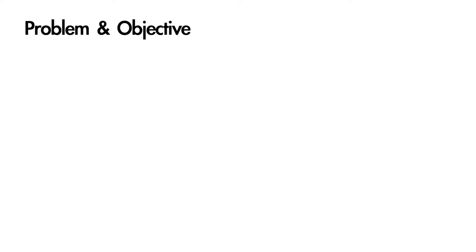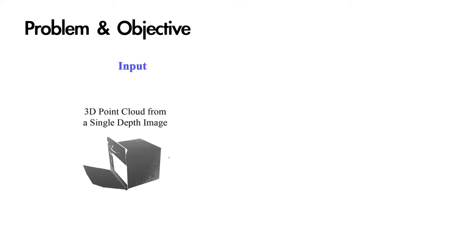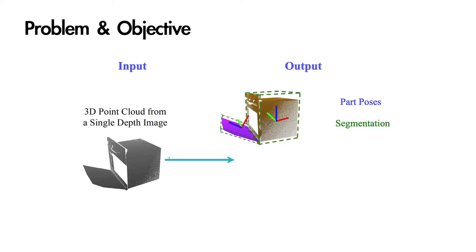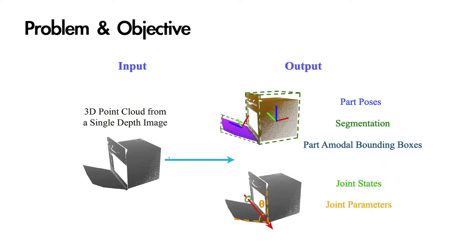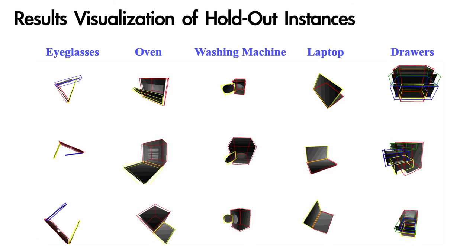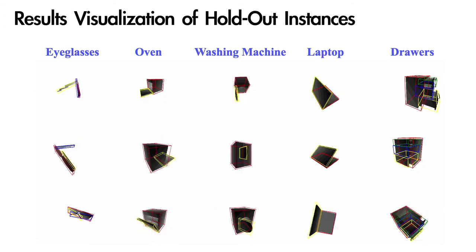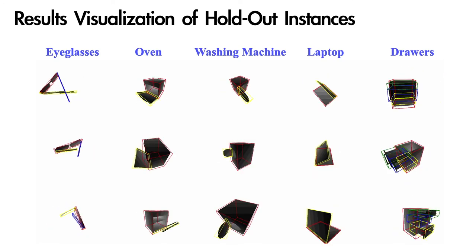Our work tackles the problem of pose estimation for articulated objects in given categories. Given a 3D depth point cloud, the goal is to predict part poses, part segmentation, part canonical model bounding boxes, together with joint states and joint parameters. Here we show results on holdout object instances of eyeglasses, oven, washing machine, laptop, and drawers.